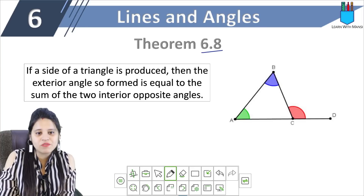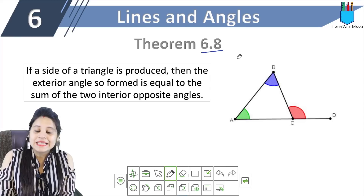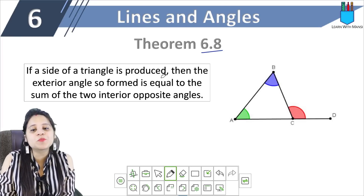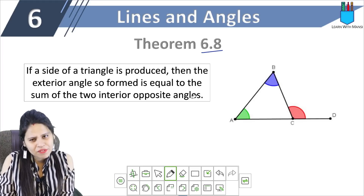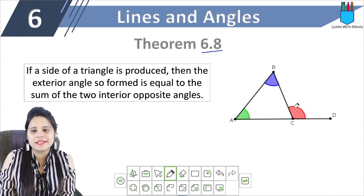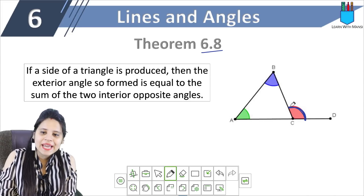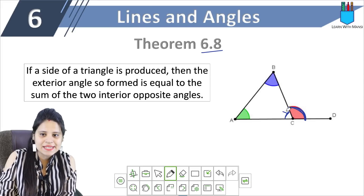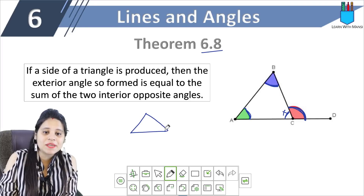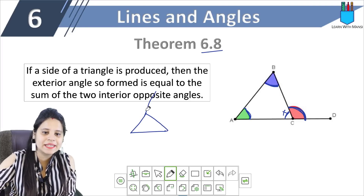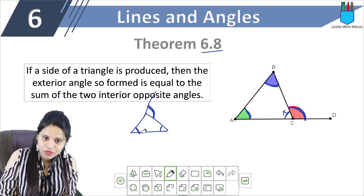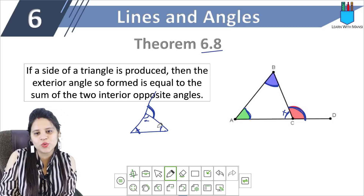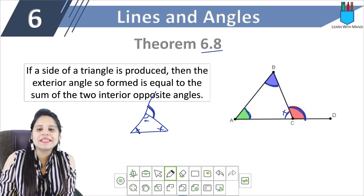Last is our final topic: Theorem 6.8, also called the exterior angle property. The theorem says: if a side of a triangle is produced, then the exterior angle so formed is equal to the sum of the two interior opposite angles. If you extend a side of a triangle, this exterior angle is equal to the sum of the two opposite interior angles — not the adjacent interior angle, but the two opposite interior angles.